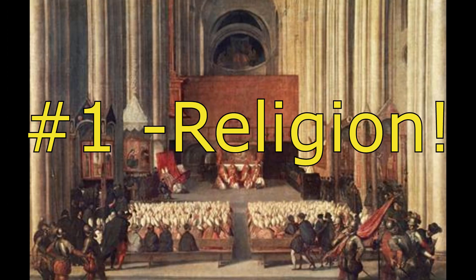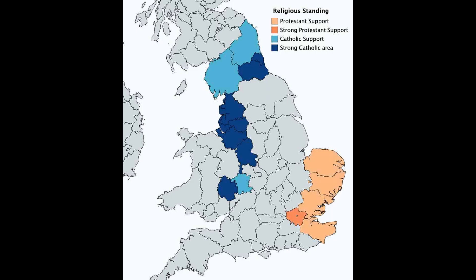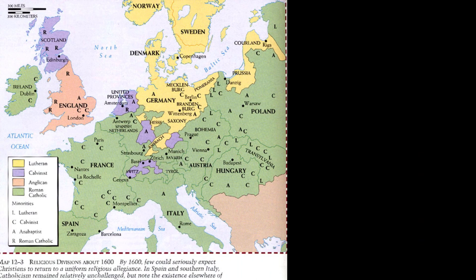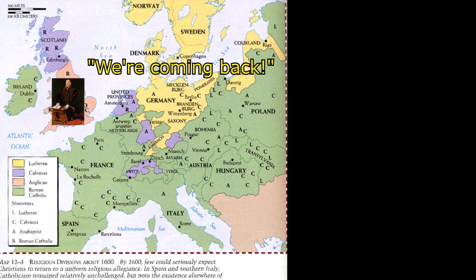Number one is religion. There was a religious schism in England at the time — those in the North and West were strongly Catholic and so disliked Elizabeth for obvious reasons, and wanted to restore Catholicism as England's core religion.